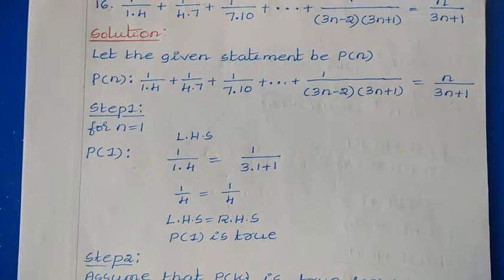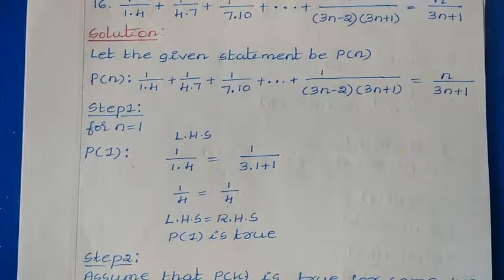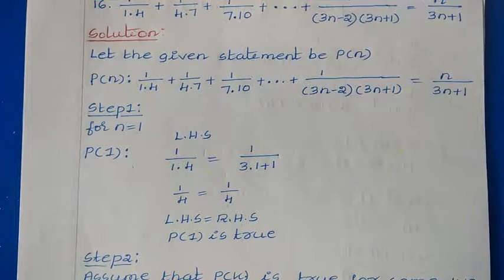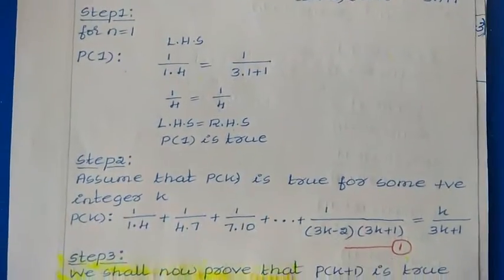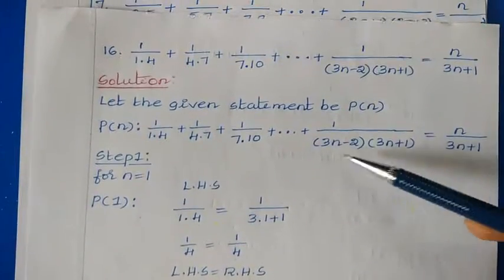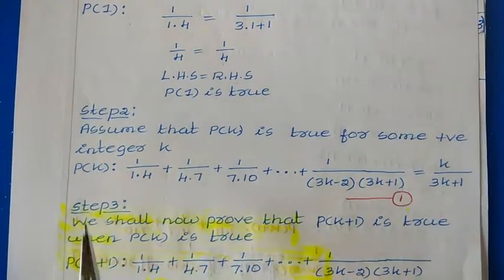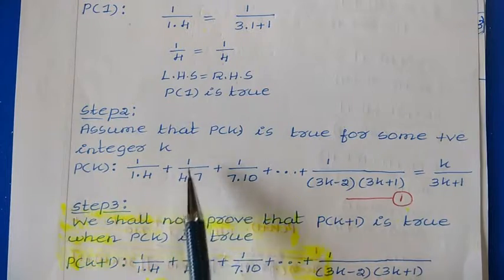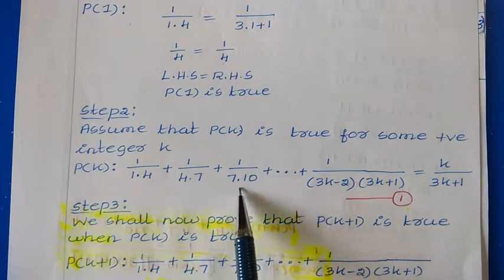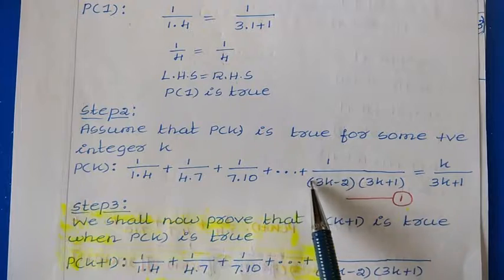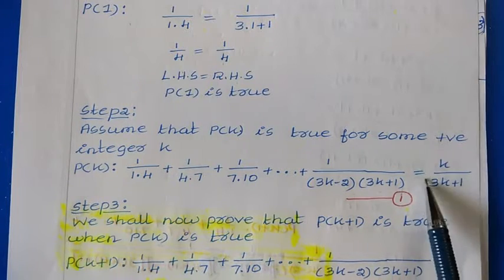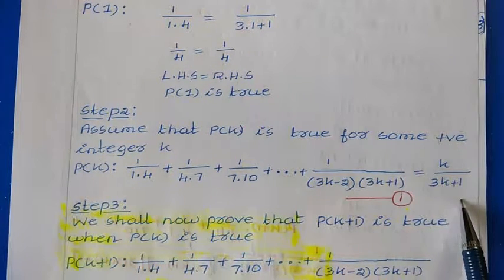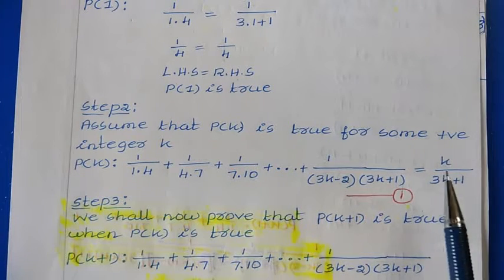The second step is assuming the statement for some positive integer k. We assume that the P(k) statement is true for integer k. Wherever you have n, replace that n with k. So we get P(k): 1/(1×4) + 1/(4×7) + 1/(7×10) + ... + 1/((3k−2)(3k+1)) = k/(3k+1). Let us call this statement 1.